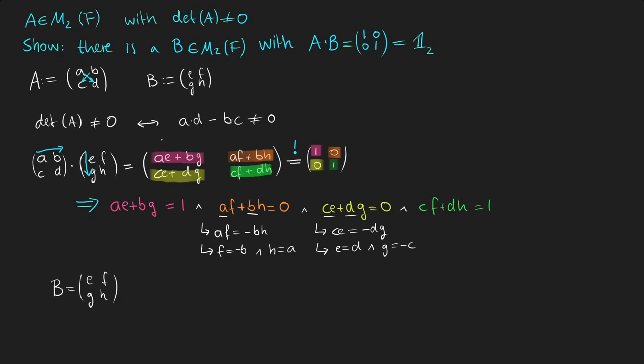As we've defined in the beginning, the matrix B is just E, F, G, H, and in the next step we can replace every entry of B with its counterpart from A. So E is equal to D, F equals negative B, G equals negative C, and H equals A.